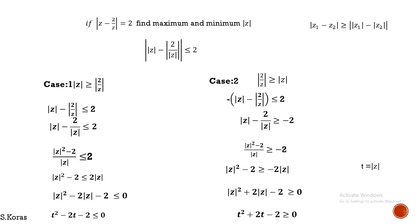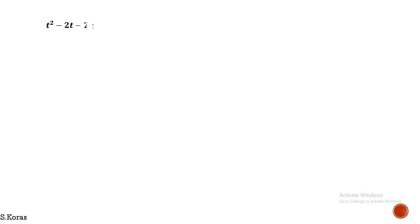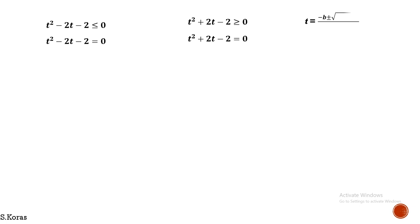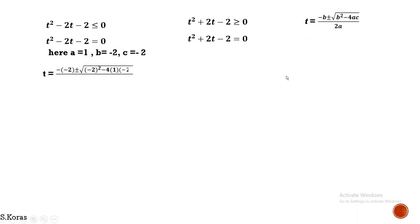Now we solve these two equations — one with ≤ 0 and one with ≥ 0. For the first quadratic equation, we use the formula: minus B plus or minus the square root of B² minus 4AC, all divided by 2A. Here A is the coefficient of T², B is the coefficient of T, and C is the constant. Substituting the values gives us our expression.